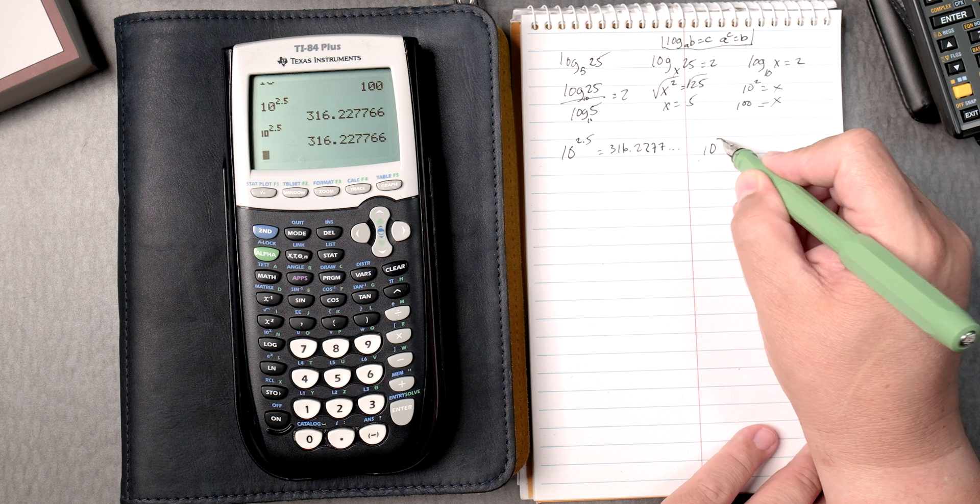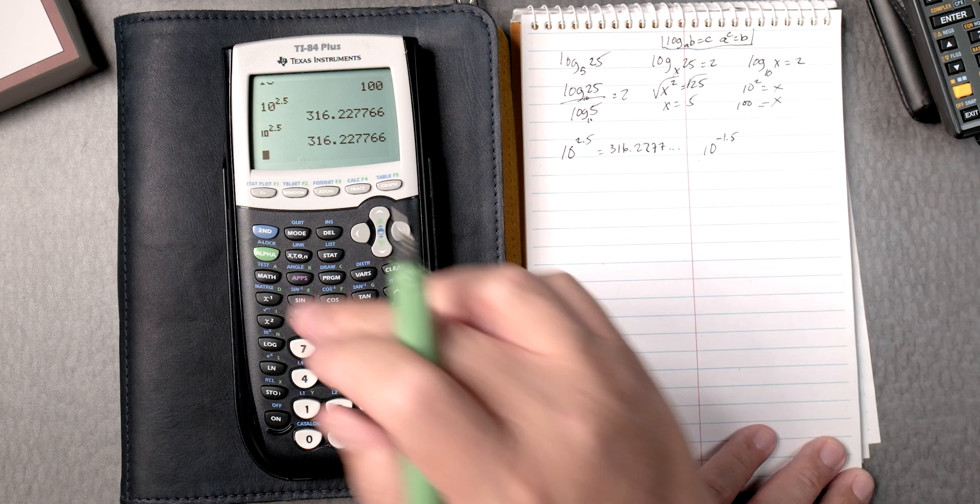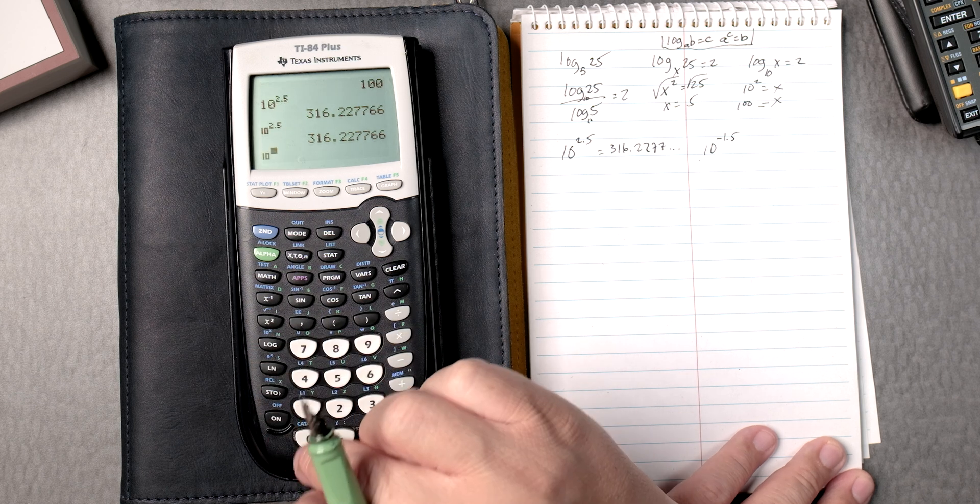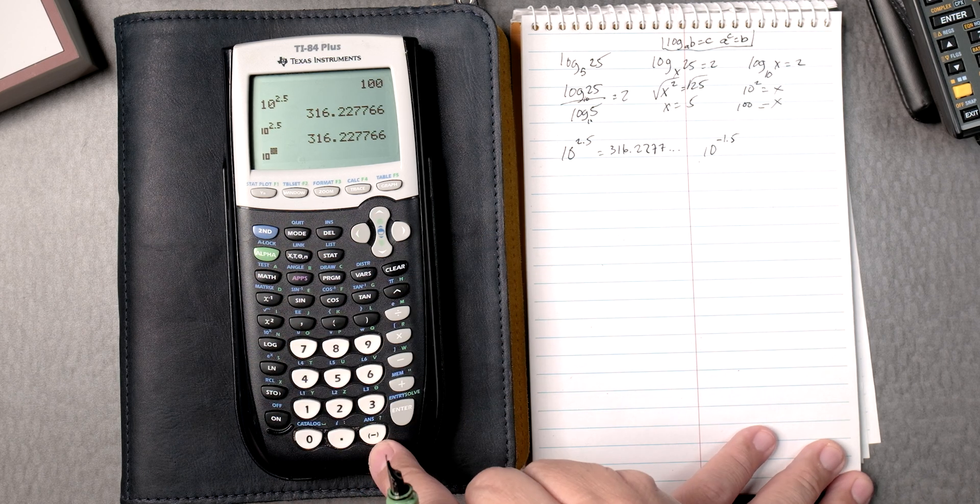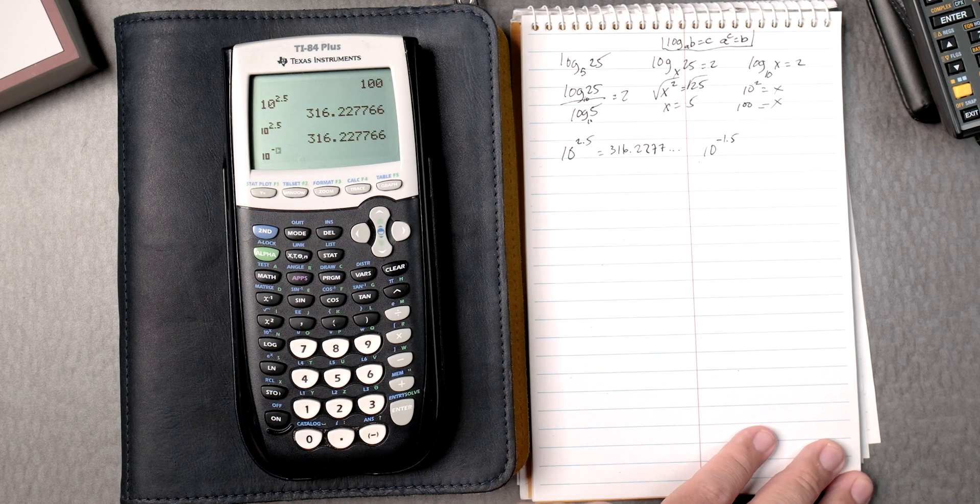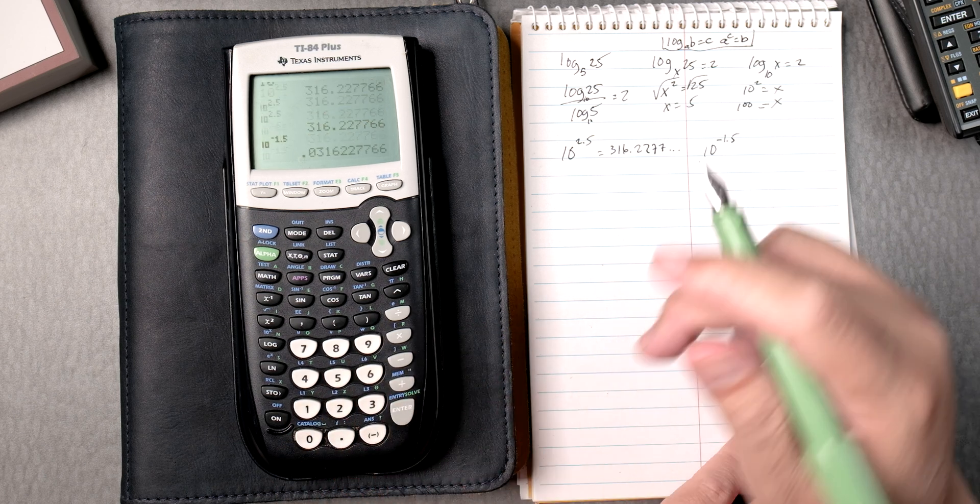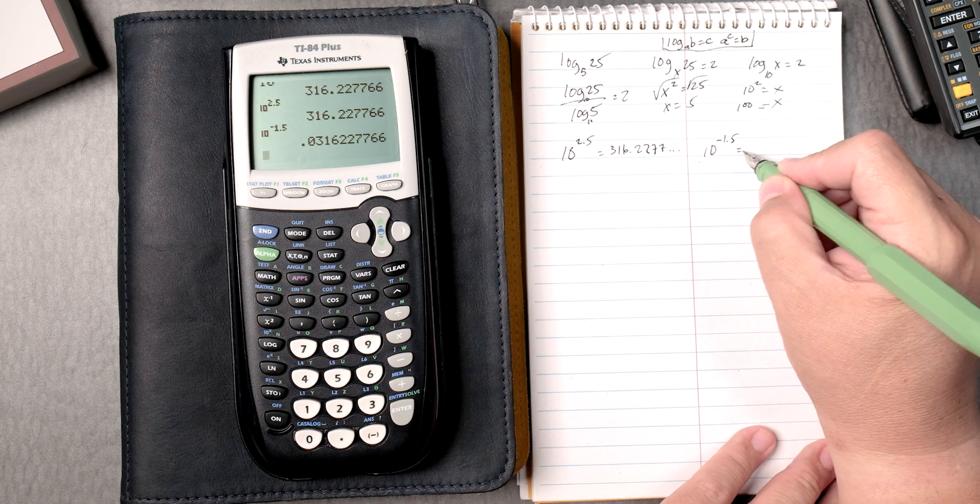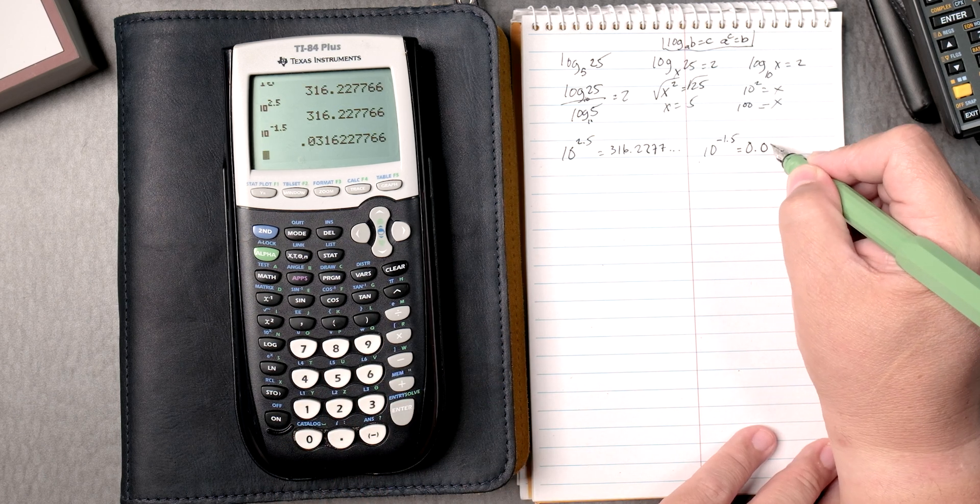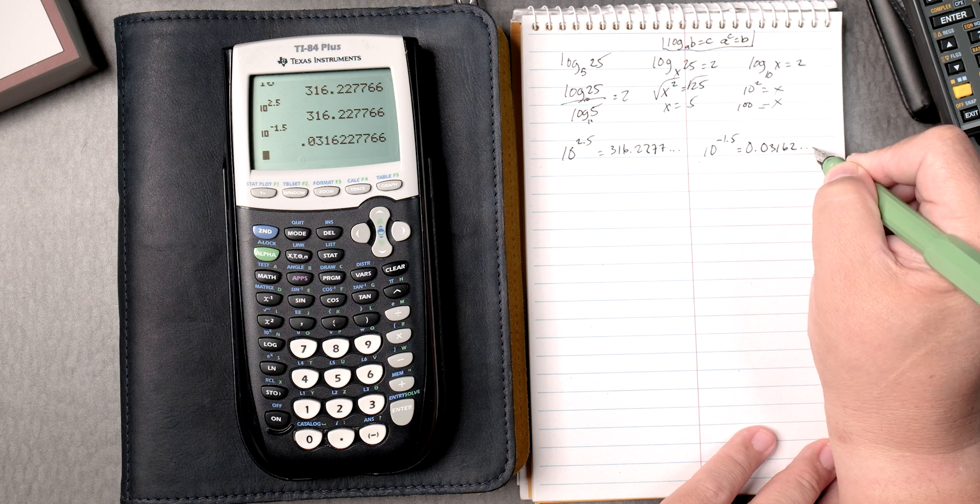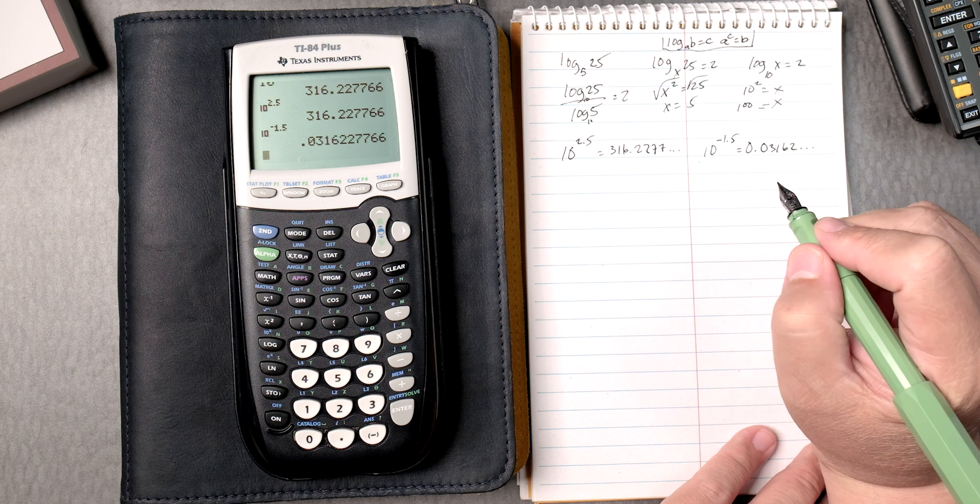Let's do 10 to the negative 1.5. We go 2nd, log, gives you 10 to the blank. You press the negative key, not the subtraction key, 1.5, you enter, and it gives you 0.03162, and you keep going.